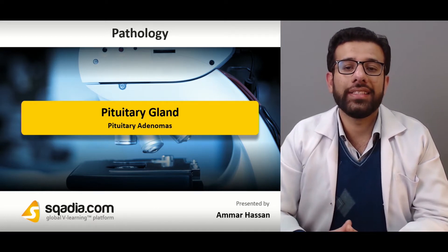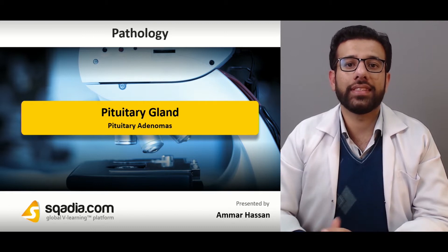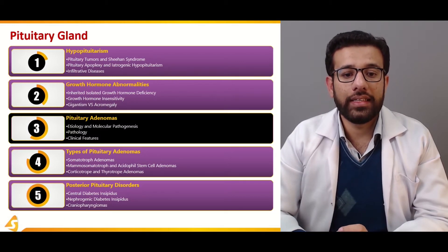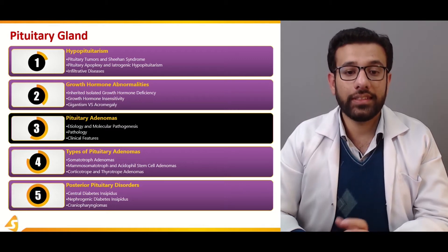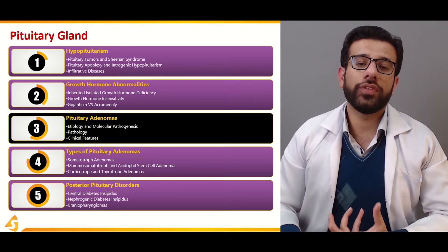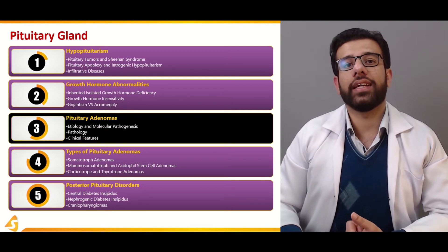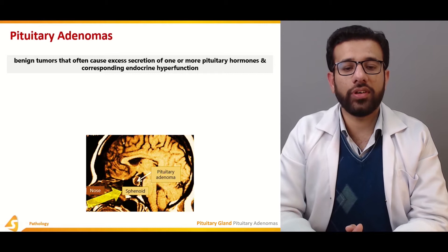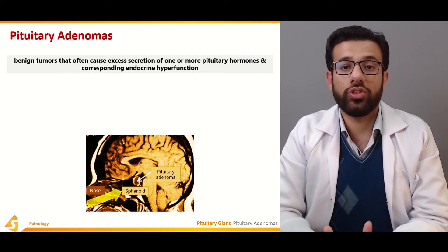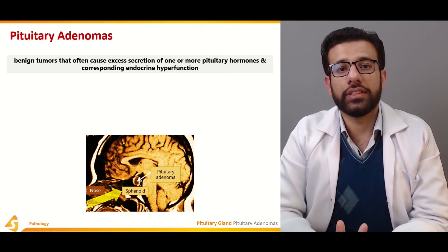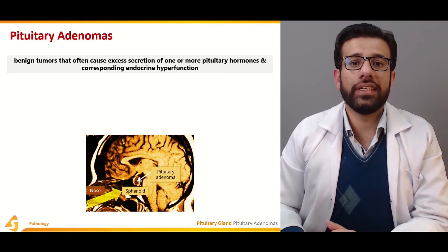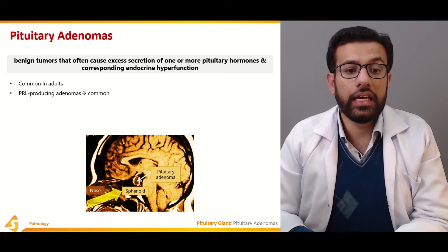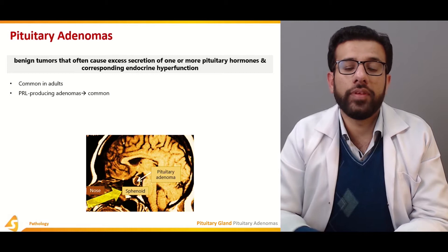Pituitary adenomas are tumors of the pituitary gland. This section covers etiology, molecular pathogenesis, pathology, and clinical features of pituitary adenomas. They are benign tumors that often cause excess of certain hormones. The most common type is prolactinoma, in which prolactin concentrations are increased, corresponding to endocrine hyperfunction. Pituitary adenomas are more common in adults, and prolactin-producing adenomas are the most common type.